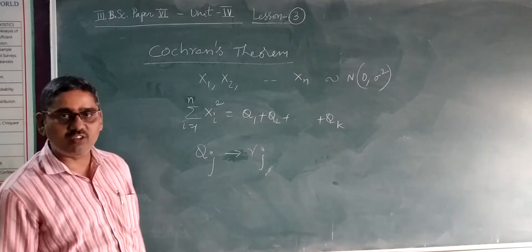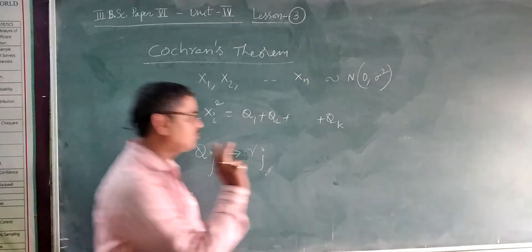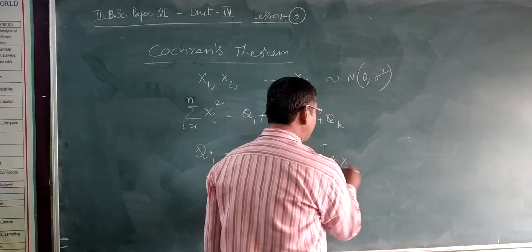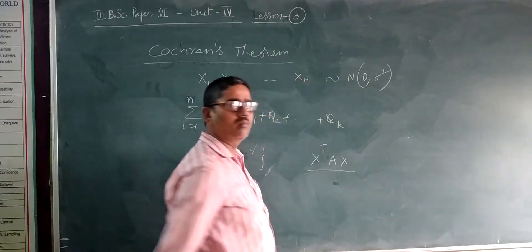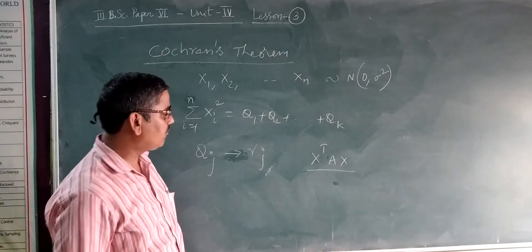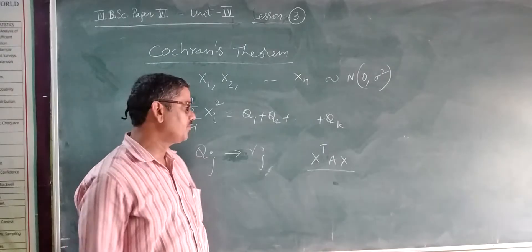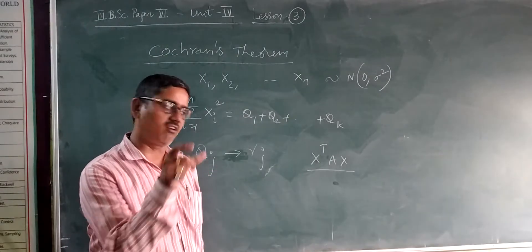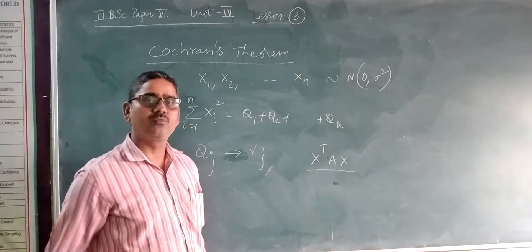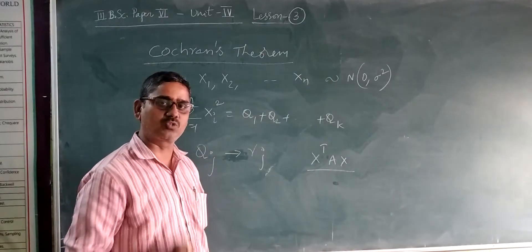What is meant by quadratic form? A quadratic form is a form of the type X-transpose times AX. From the correct definition of a quadratic form, you get X-transpose times AX — for example, 2X1 squared plus 3X2 squared, and so on.